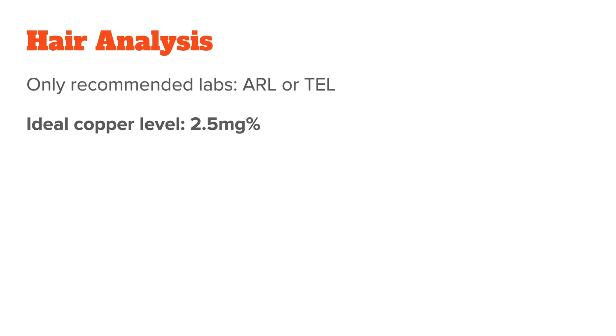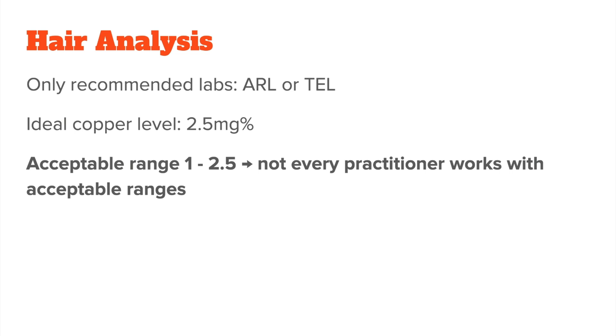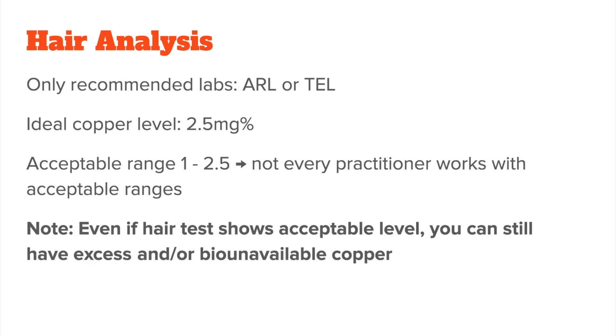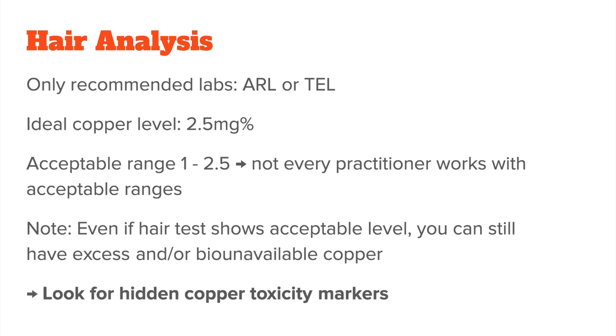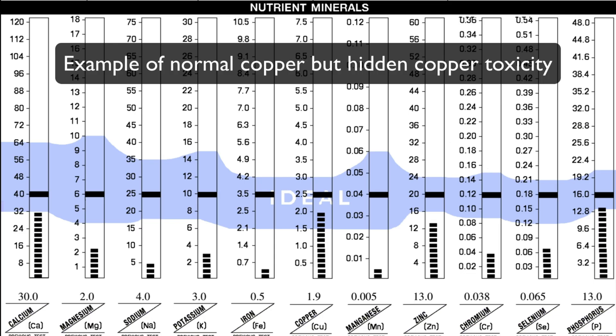If you do a properly done hair analysis — from one of the two labs I recommend — you will be able to spot copper toxicity very effectively. The ideal copper level is 2.5 milligram percent, with an okay range between 1 and 2.5. But even if your test shows this level, you can still have excess and/or bio-unavailable copper. The great thing about hair testing is that there are so-called hidden copper toxicity markers — markers that basically always correlate with copper toxicity or a bioavailability problem, even when the copper value itself is normal.